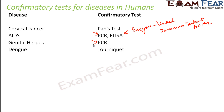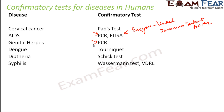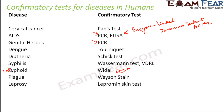For dengue fever, the confirmatory test is the tourniquet test. For diphtheria, it is the Schick test. For syphilis, it is the Wassermann test as well as VDRL. For typhoid, it is the Widal test — this is very important and often asked in exams. For plague, it is Wayson's stain. For leprosy, it is the Lepromin skin test. For scarlet fever, it is the Dick test. For tuberculosis, it is the Mantoux test.